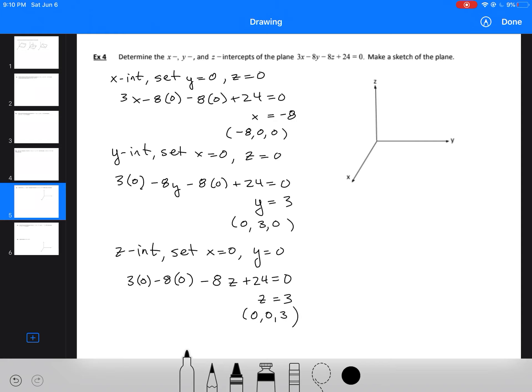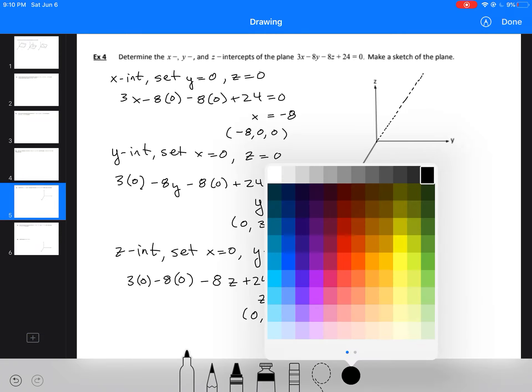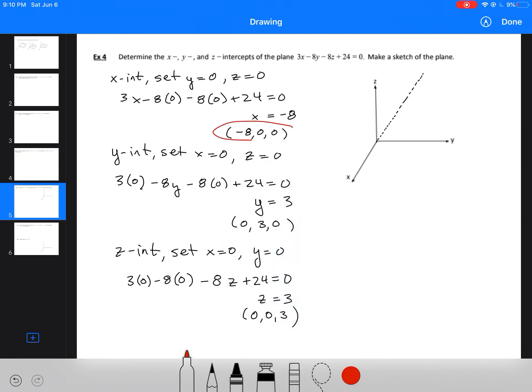Now what we do is draw a triangle to represent a plane. I'm going to extend the x-axis back here using a dotted line. Now I'll plot my three points. First, my x-intercept. It's negative, so it goes back here. We'll say it's about here. This is my x-intercept (-8, 0, 0).